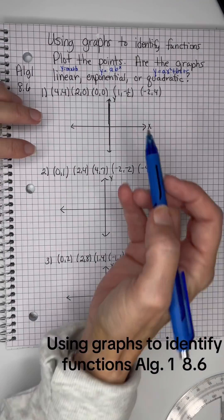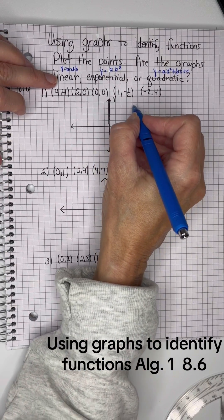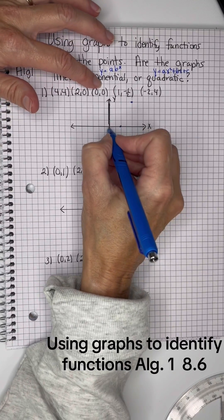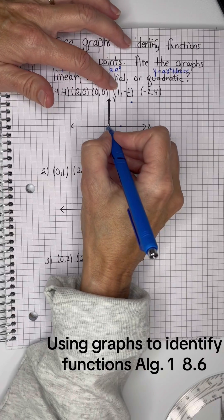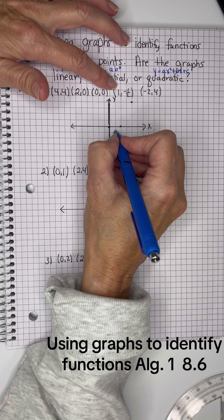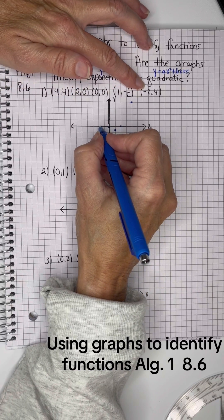So we've got some ordered pairs that we want to graph. 4, 4 is right 4, up 4. 2, 0. 0, 0. 1, 1, negative 1 half, and negative 2, 4.